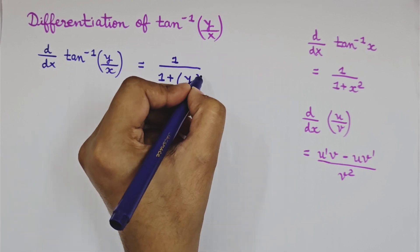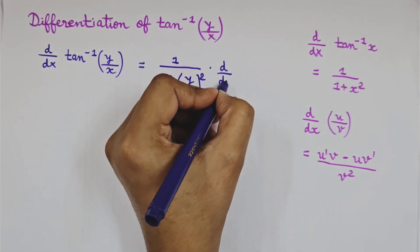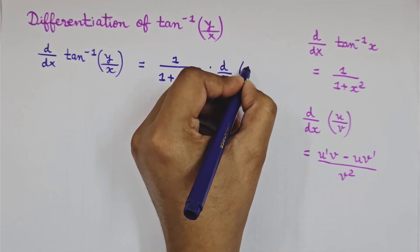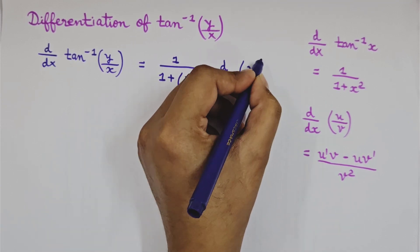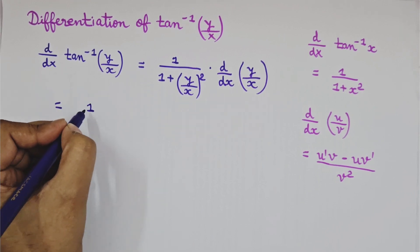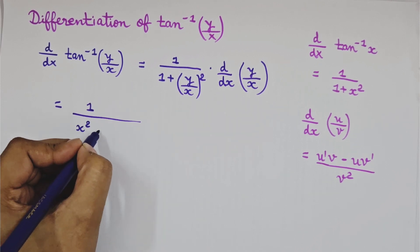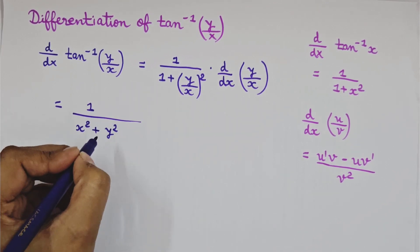But here we'll write it as 1 upon 1 plus y by x whole square into the differentiation of y by x. That is as we follow the chain rule. So we have written it as d by dx into y by x.